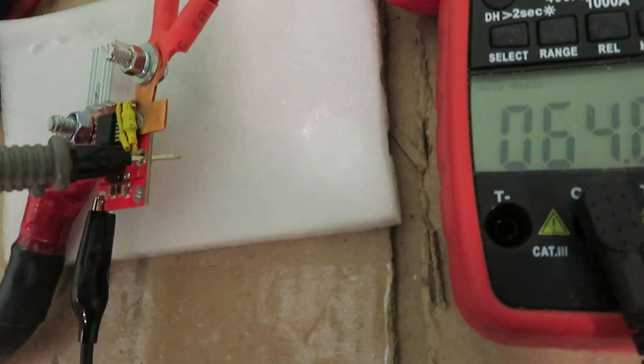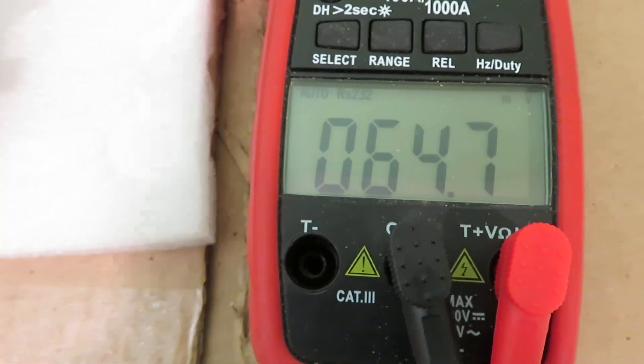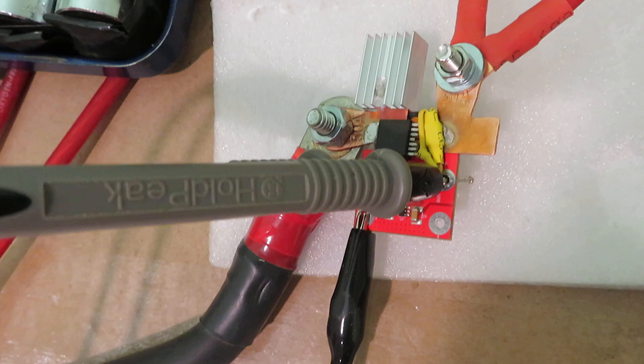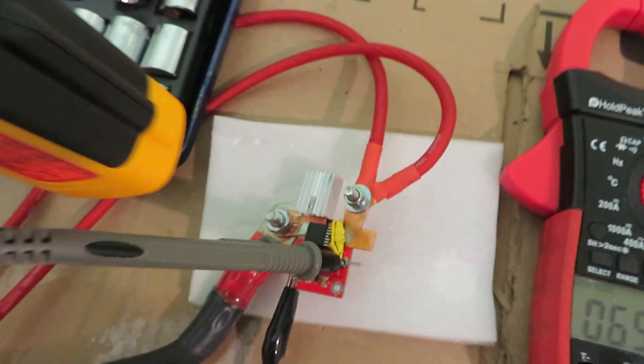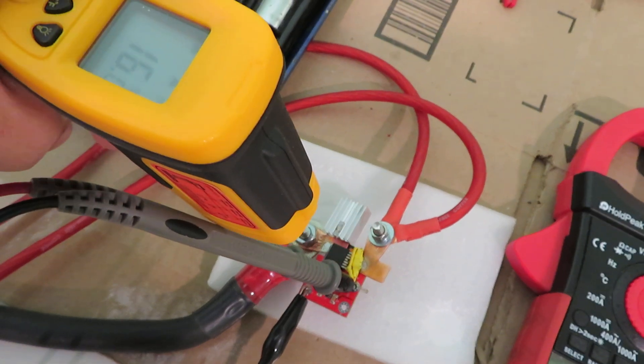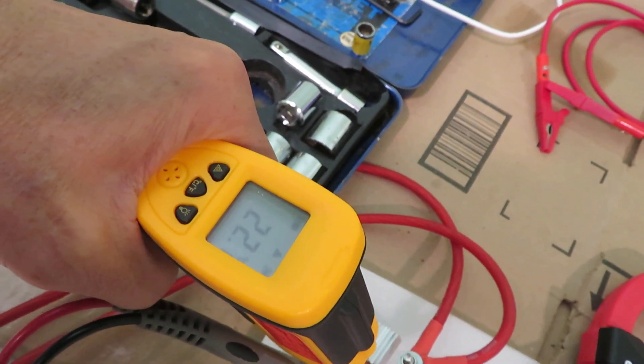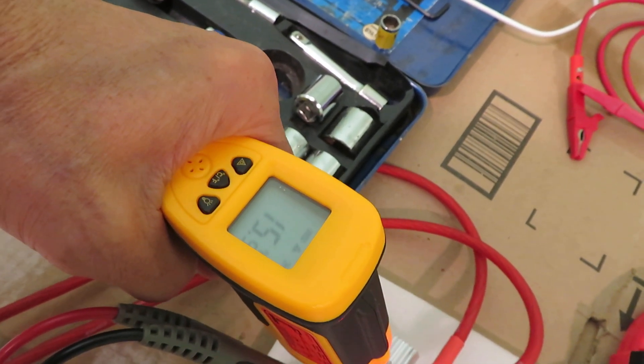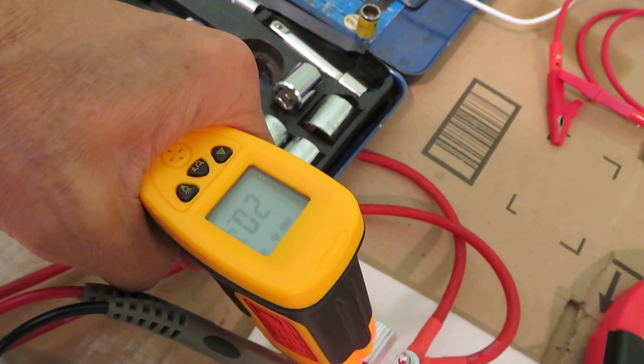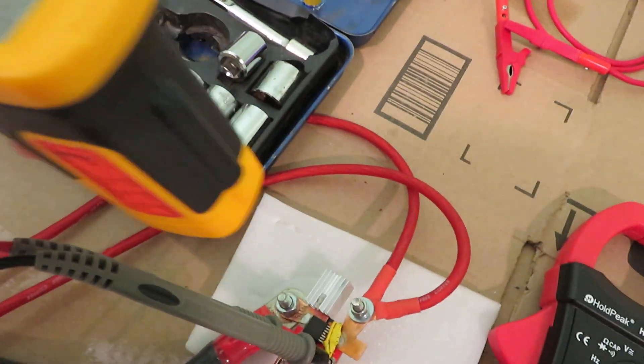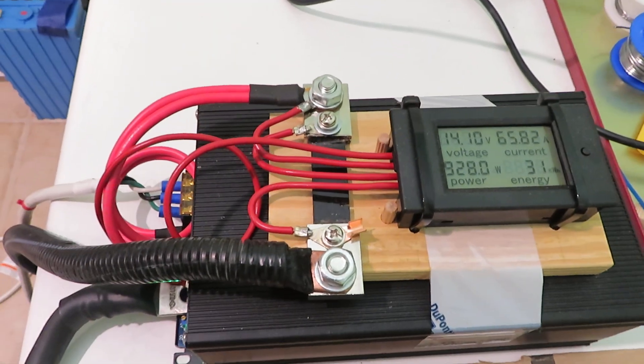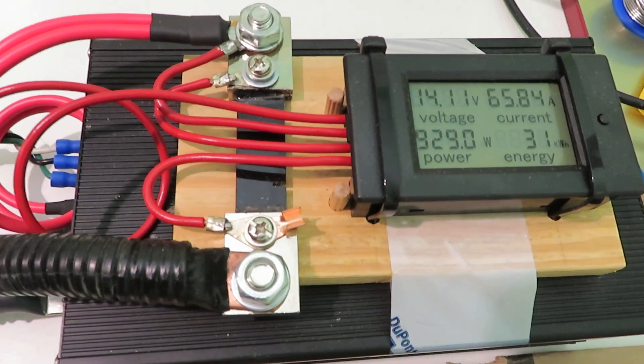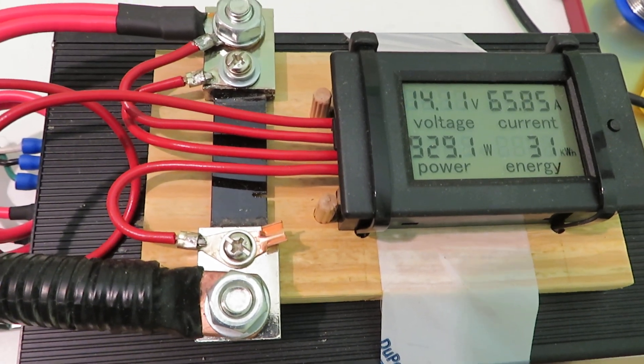Later on the voltage drop would increase because when the ideal diode warms up, the resistance goes up slightly. Let's measure the temperature. Right now the temperature is about 22 to 23 degrees Celsius. It's charging at 65-66 amps and the voltage has climbed to 14.11 volts.